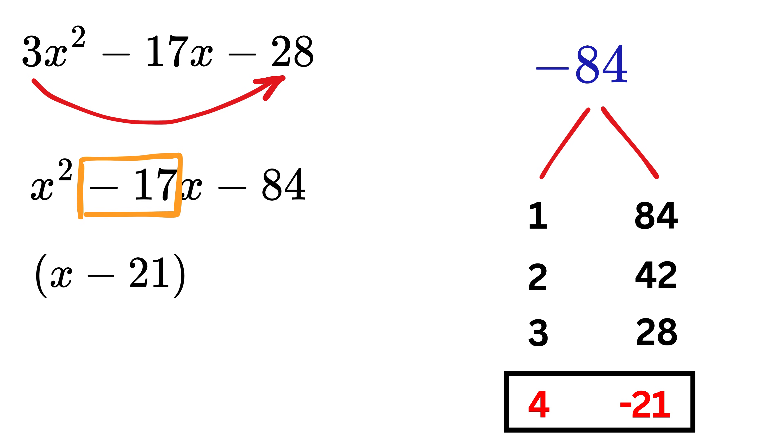Thus write x minus 21 and x plus 4. Now whatever is the coefficient of x squared, which is 3 here, write it in the denominator like this and reduce the fractions as much as possible. We get 7 here,